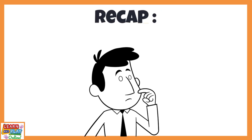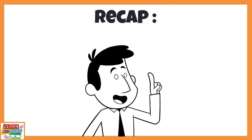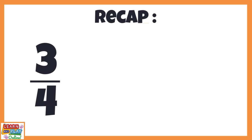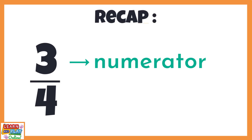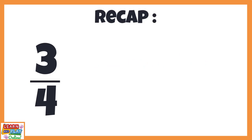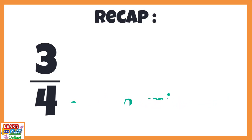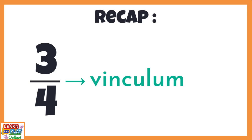First, let's quickly recap what we know about fractions. In a fraction, the number at the top is called the numerator. It refers to the number of parts you have out of a whole. The number at the bottom is called the denominator. It refers to the total number of equal parts there are of a whole. The line in between the numerator and the denominator is called a vinculum.